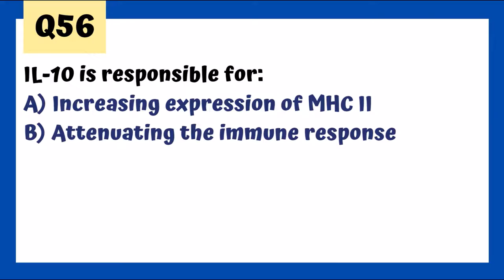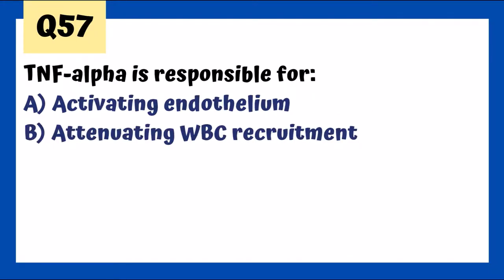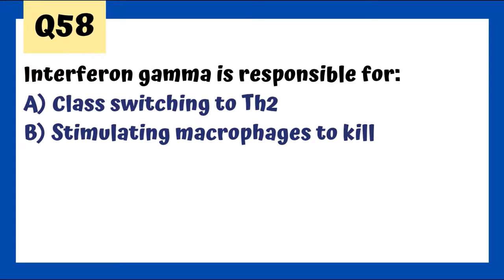IL-10 is responsible for attenuating the immune response, along with TGF-beta. TNF-alpha activates endothelium, causes white blood cell recruitment, maintains granulomas (e.g., in tuberculosis), and mediates fever like IL-1 and IL-6. Interferon gamma stimulates macrophages to kill, inhibits Th2 cell differentiation, induces IgG class switching, and promotes granuloma formation — three G's: interferon gamma, granuloma formation, IgG class switching.